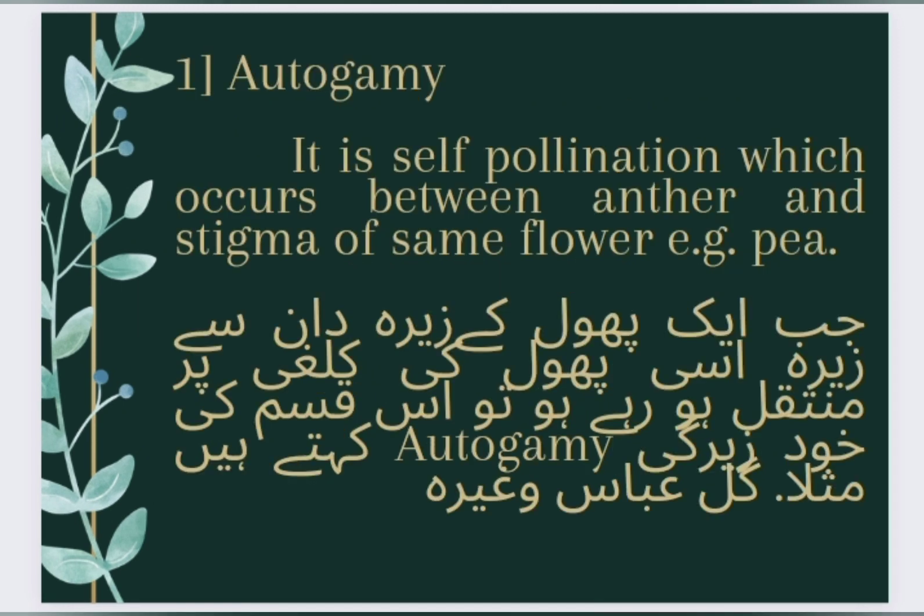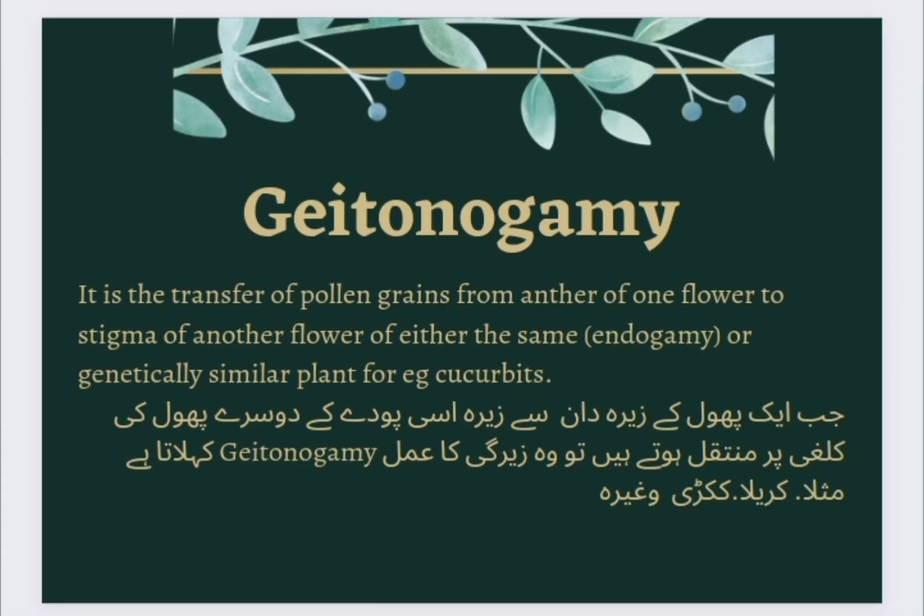Autogamy: It is self-pollination which occurs between the anther and stigma of the same flower. Example: Balsam plant (Gul-e-Baas). جب ایک پھول کے جیرے دان سے جیرا اسی پھول کی کلغی پر منتقل ہو تو اس قسم کی خود جیرگی کو Autogamy کہتے ہیں۔